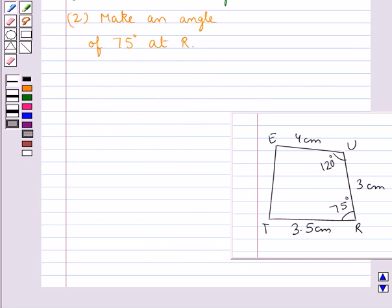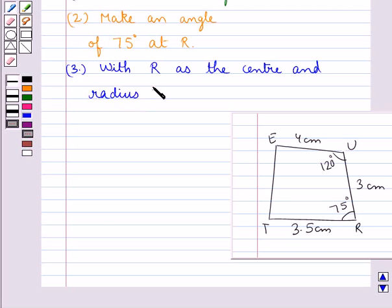Now our next step is to locate the point U, where UR is 3 cm. So we write, with R as the center, and radius 3 cm.